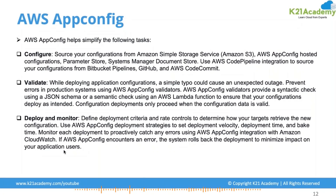You can monitor each deployment proactively to catch errors using AWS App Config integrated with Amazon CloudWatch. If App Config encounters any error, it will automatically roll back the deployment to minimize the impact on your application. This is how App Config helps you do configuration deployment in a very programmatic manner.